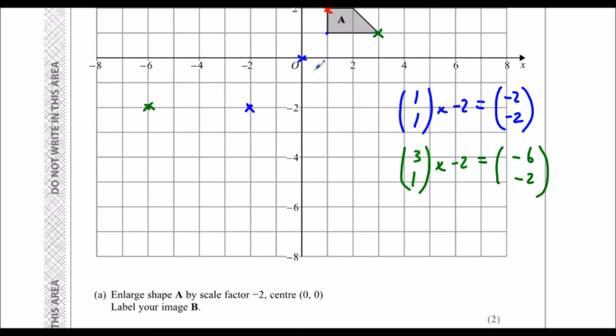To get to this red point, it was along 1, up 2. Times by minus 2. 1 times minus 2 is minus 2. 2 times minus 2 is minus 4. That's back 2, down 4.